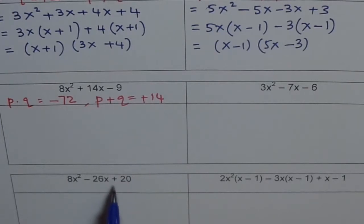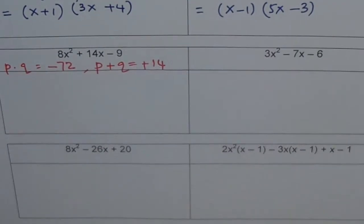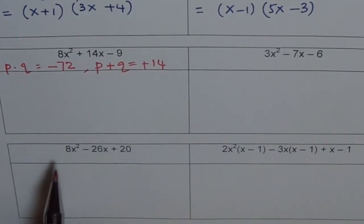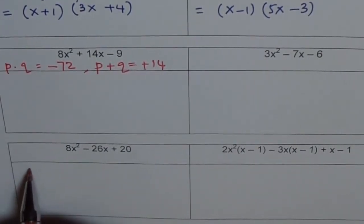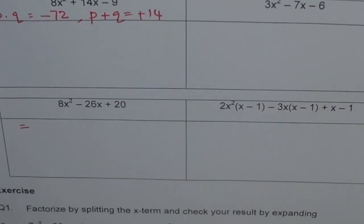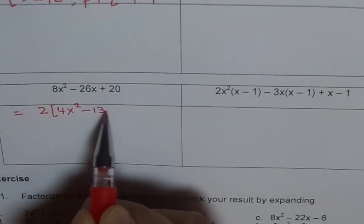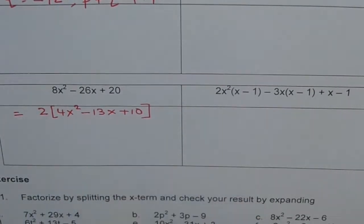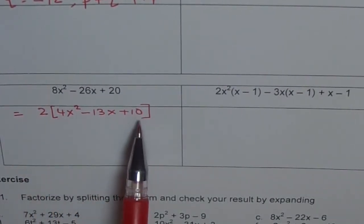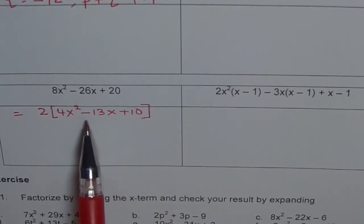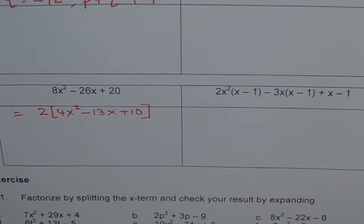Next: 8x squared minus 20x plus 20. Sometimes you may have to factor out common terms first. Here I can factor out 2, so let me factor 2 out to simplify: 2 times (4x squared minus 10x plus 10) — wait, that gives 2 times (4x squared minus 13x plus 10). Now you are looking for two numbers whose product is 4 times 10, which is 40, and whose sum is minus 13. 8 times 5 makes the deal: negative 8 and negative 5 multiply to 40 and add to minus 13. Adopt the same process and get your answer.